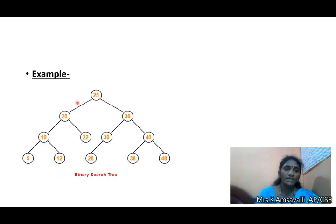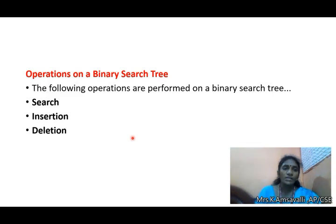In the given example, 25 is the root node. All values lesser than 25 are in the left subtree and all values greater than 25 are in the right subtree. The operations performed on a binary search tree are: search operation, insert operation, and deletion operation.